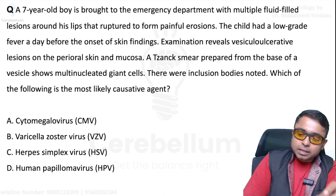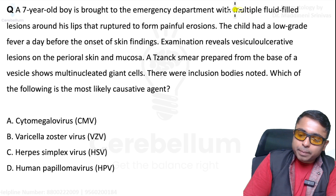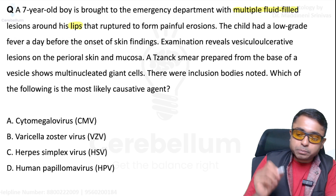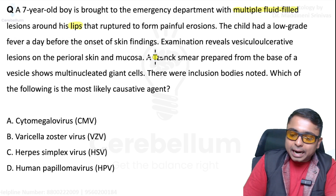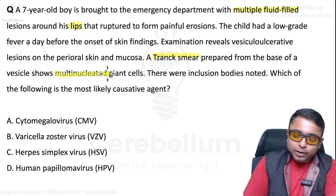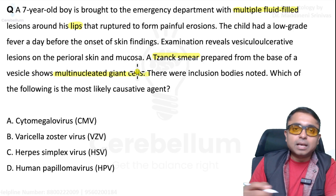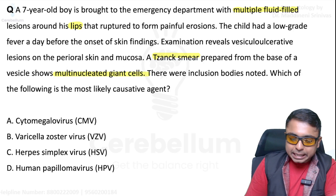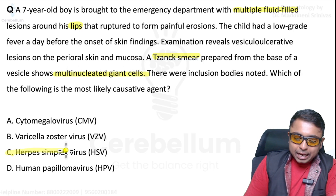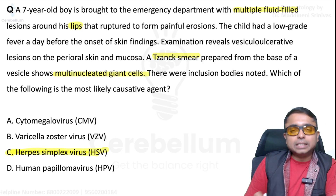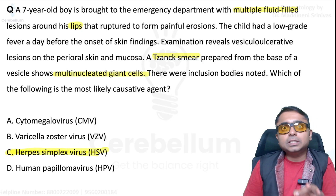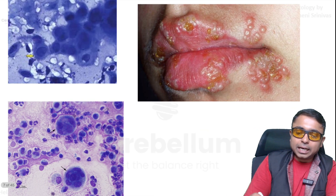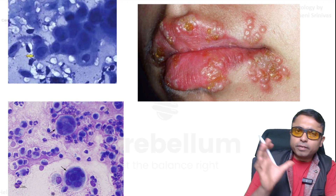The first question: a patient presenting with multiple fluid-filled lesions around the lips, and Tzanck smear showing multinucleated giant cells and inclusion bodies. The most likely causative agent is oral labial herpes — the organism is herpes simplex virus. This is the clinical picture they would have given as an image, showing those multinucleated giant cells.